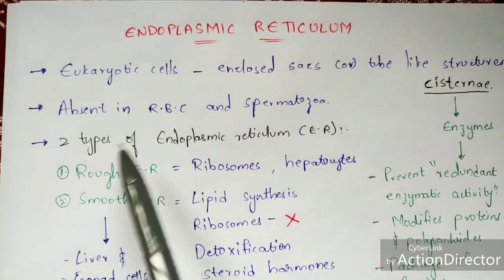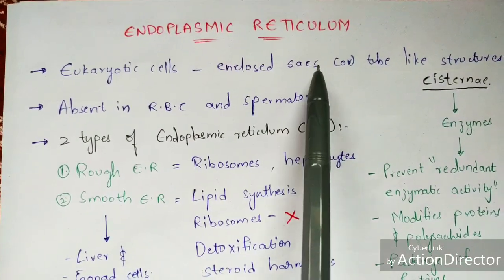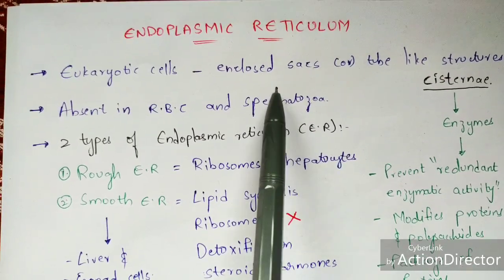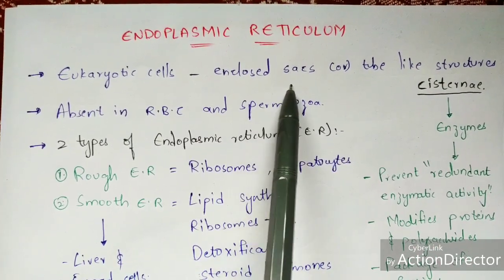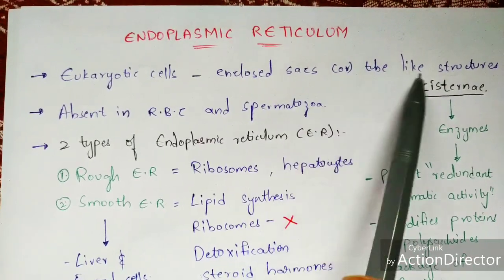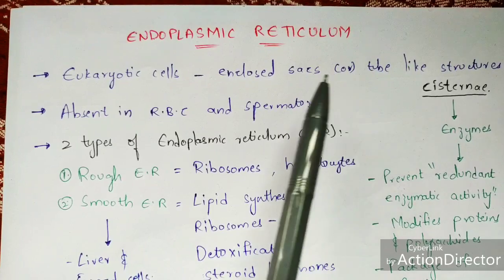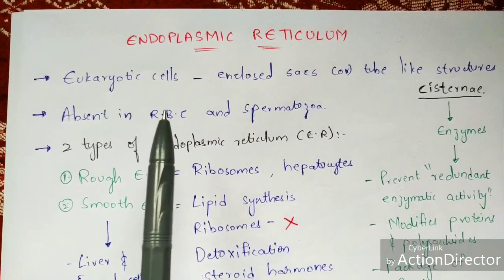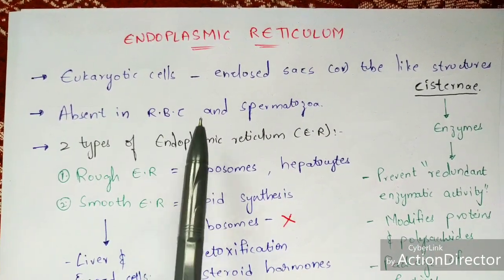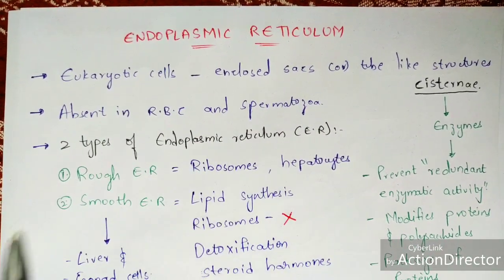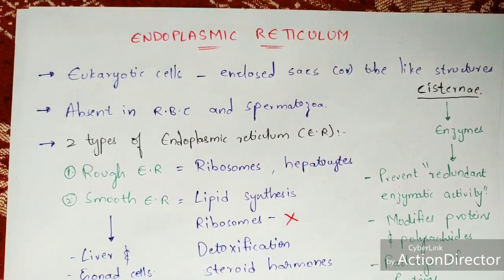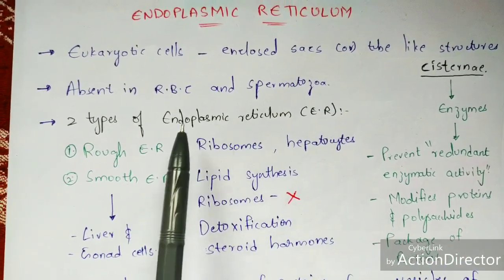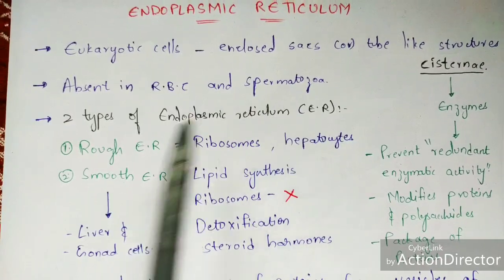The endoplasmic reticulum can be found in eukaryotic cells. It is shortly abbreviated as ER and it is an enclosed sac or tubular structure. The endoplasmic reticulum is absent in red blood cells and also in spermatozoa.